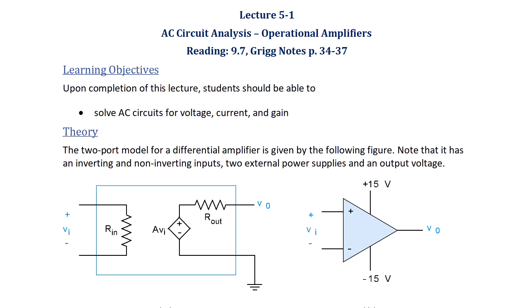Recall that the two-port model for a differential amplifier is given by the following figure, which models it as a voltage-controlled voltage source, and that there is an inverting and non-inverting input and two external power supplies and an output voltage. We can also model it with a realistic model where we also have an output resistance, where A is a really large value and we like to say that the op-amp has an infinite input impedance.